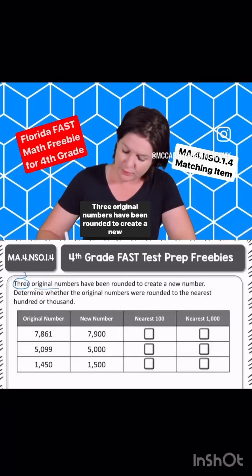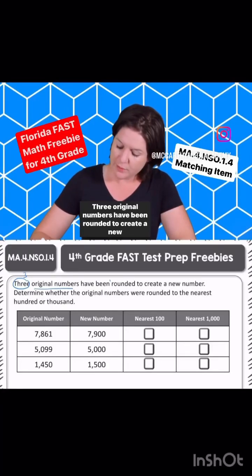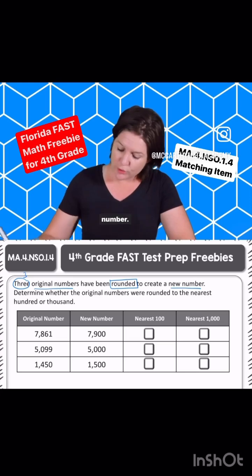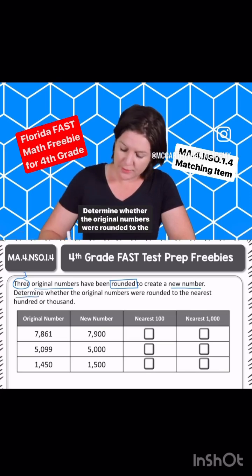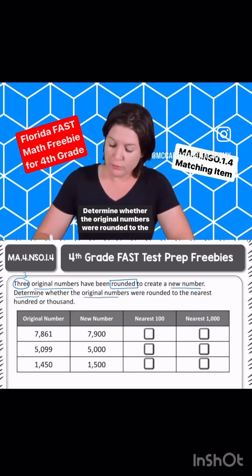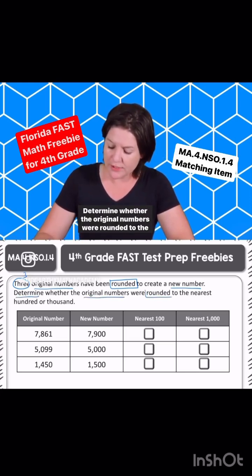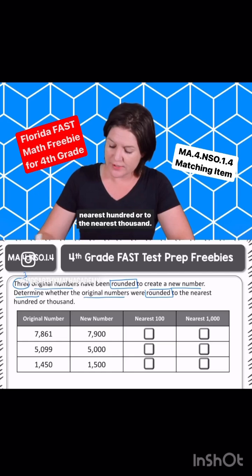Three original numbers have been rounded to create a new number. Determine whether the original numbers were rounded to the nearest hundred or to the nearest thousand.